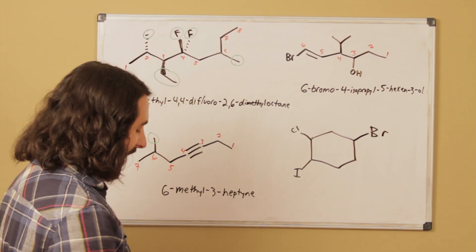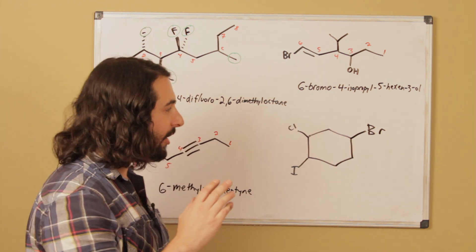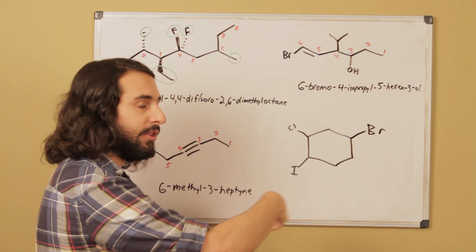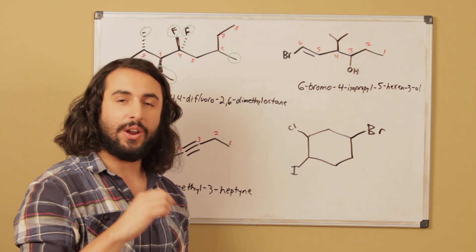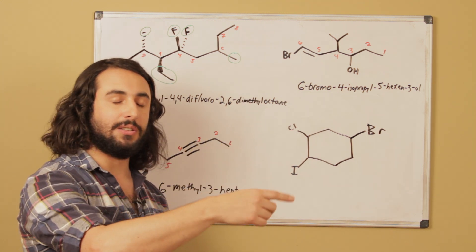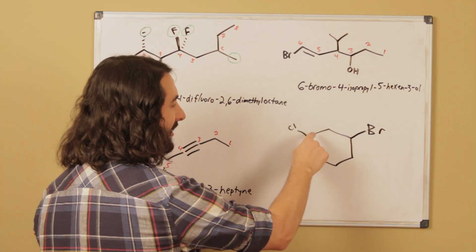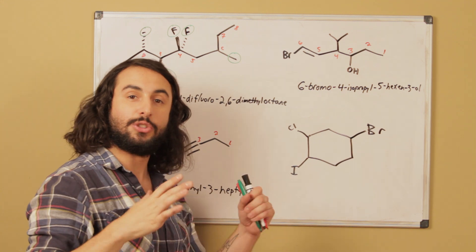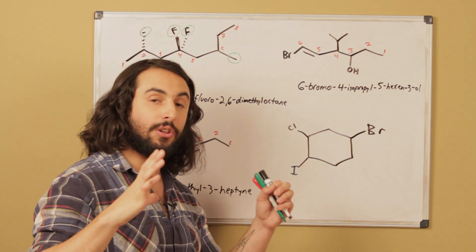Lastly, we have a substituted cyclohexane. These are numbered differently than linear molecules. With a linear molecule we have two options — left to right or right to left — but with a ring there's no given starting point. The algorithm for numbering a ring assigns values to the carbons so as to give all substituents the lowest set of locants. We have twelve options: any of the six carbons could be carbon one, and from there we can go clockwise or counterclockwise.